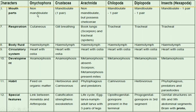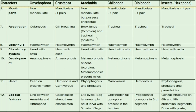Regarding respiration: Onycophora respires by cutaneous method. Crustacea respires by gills. Arachnida respires by book lungs — scorpions use book lungs only, while spiders use both book lungs and trachea. Chilopoda and Diplopoda respire by the tracheal system. Insects also respire by the tracheal system.